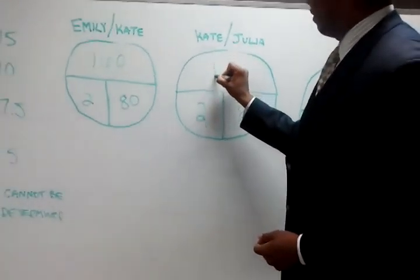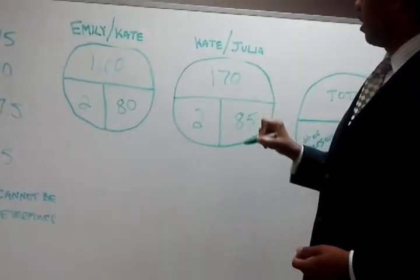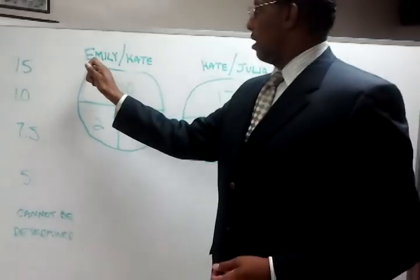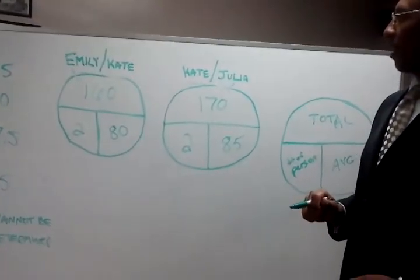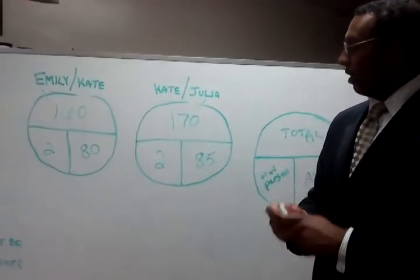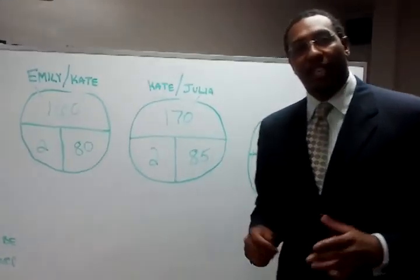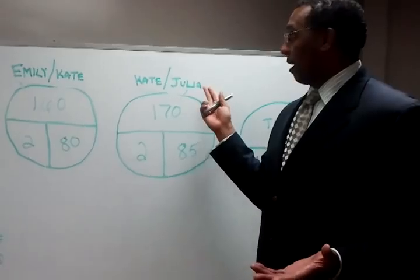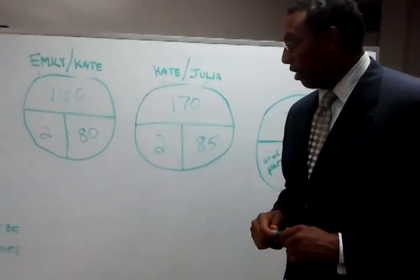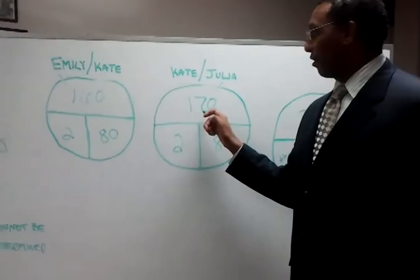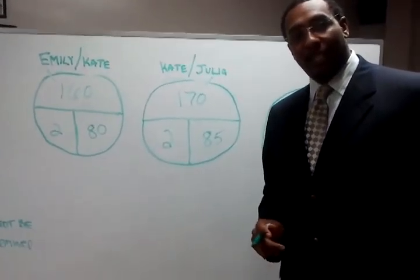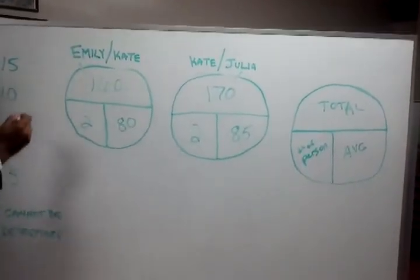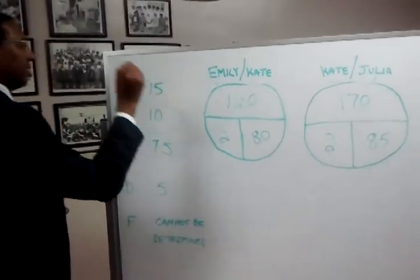And two times 85 is 170. These numbers represent Julia and Emily's group totals. The one thing in the middle that's common is Kate — she's the variable. And we know that because they're asking about Julia and Emily, and Kate has a relationship with both, we're going to take the difference of 170 and 160 to solve for the answer. That answer is letter B — 10.